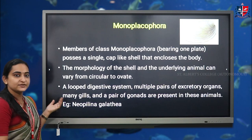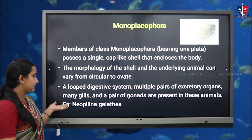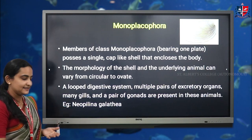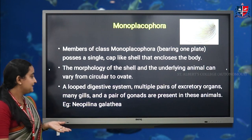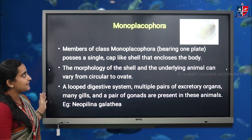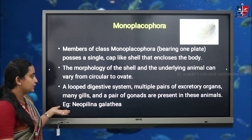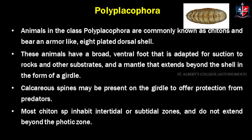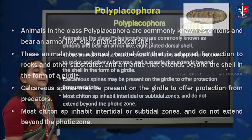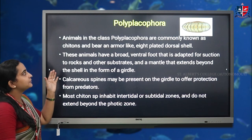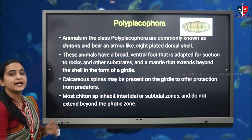Many gills — five to six pairs — and a pair of gonads are present in Monoplacophora. An example is Neopilina galatheae.